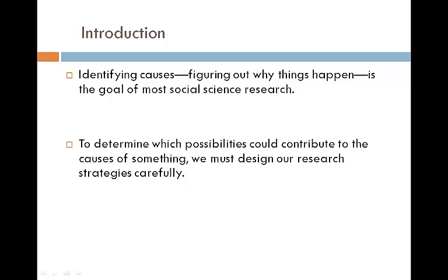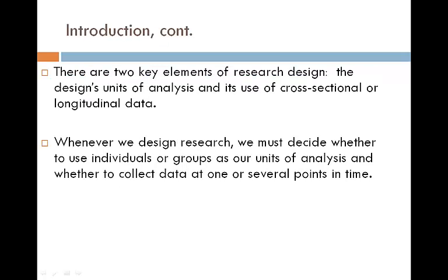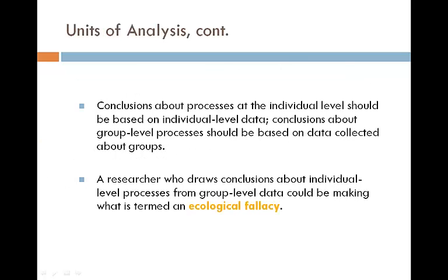To determine which possibility could contribute to the causes of something, we must design our research carefully. There are two key elements of research design: the design's units of analysis and its use of cross-sectional or longitudinal data. Whenever we design research, we must decide whether to use individuals or groups as our units of analysis, and whether to collect data at one or several points in time.